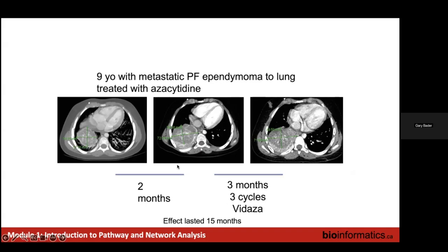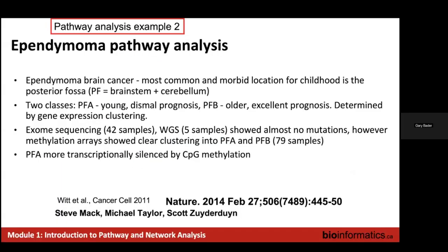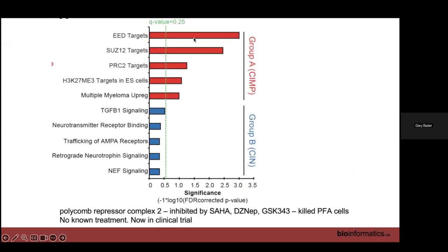They applied one course of 5-azacytidine treatment, and that actually stopped the tumor growing for 15 months. The patient was able to regain their energy and leave the hospital. That was enough to kick off clinical trials that are still ongoing and generally show promise. The big picture take-home message is that we went from knowing nothing about the mechanism of this disease to a drug with interesting clinical effect in about two years — and pathway analysis was an important link in that chain.